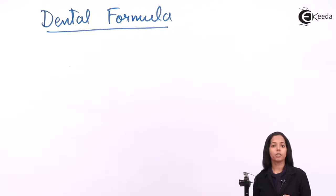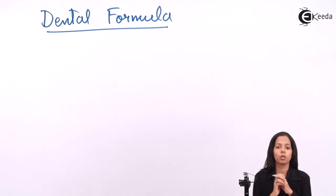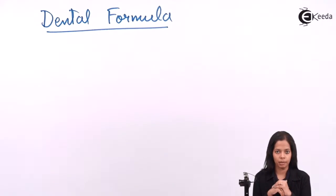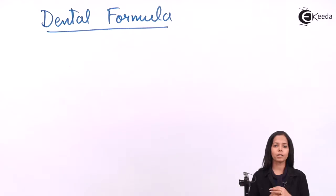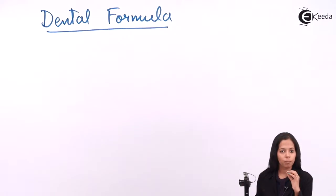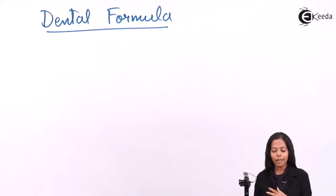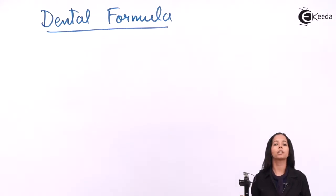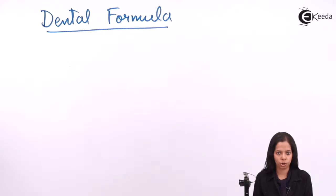In case of milk teeth, there are a total of 20 teeth present. In case of permanent teeth, there are a total of 32 teeth present. Let's see how these 20 teeth and 32 teeth are arranged.